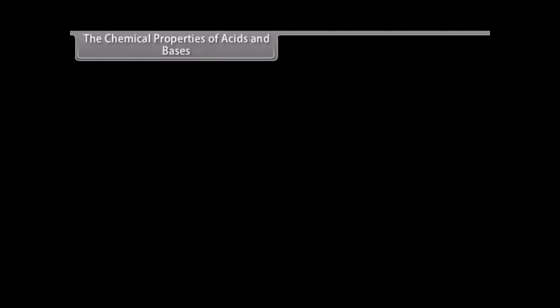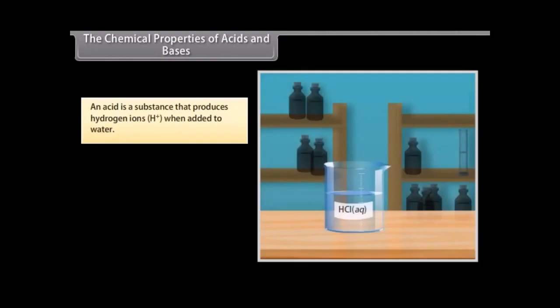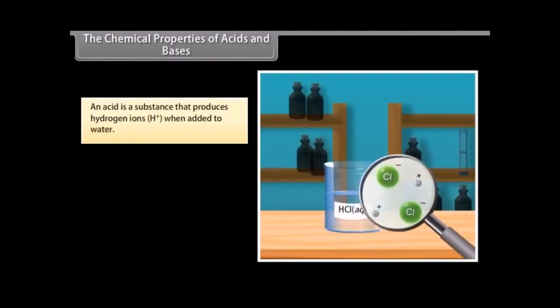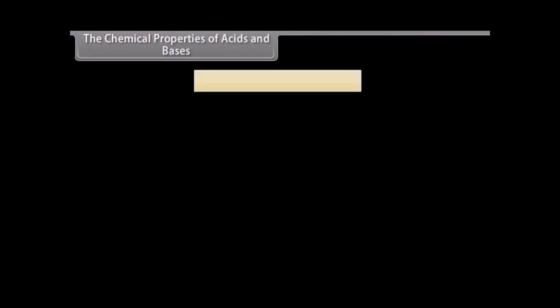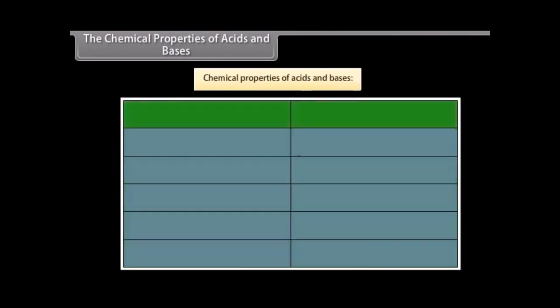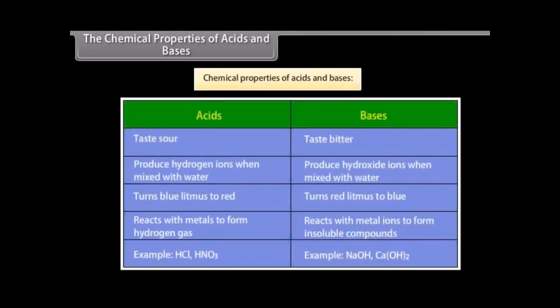The chemical properties of acids and bases. An acid is a substance that produces hydrogen ions when added to water, whereas a base is a substance that produces hydroxide ions when added to water. Both acids and bases have different chemical properties. Let us look at their properties.